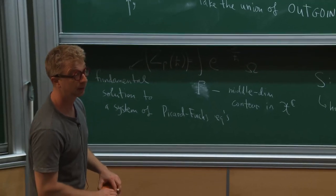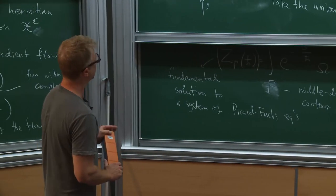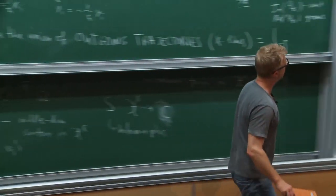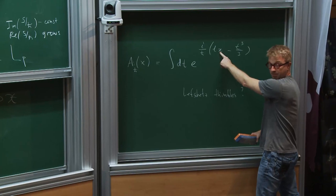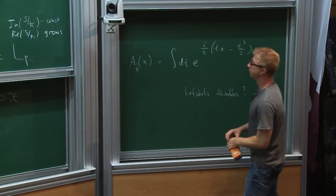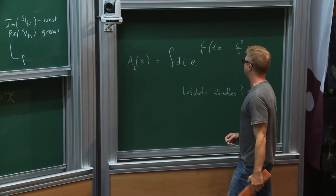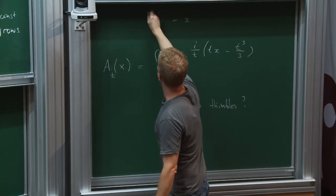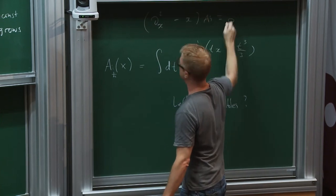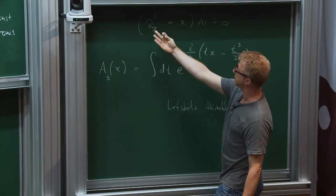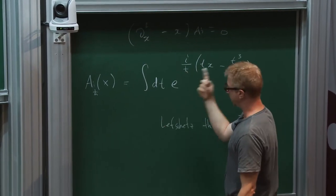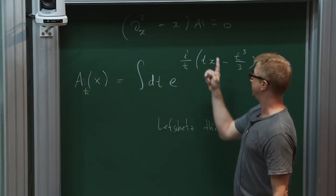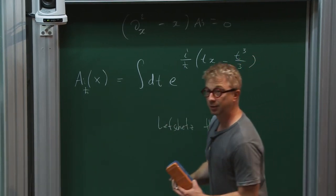Q: When you say Z is a fundamental solution to a system, in which variable? A: The parameters of S. For example, here the parameter of S is x, and so this function solves the famous equation, which is roughly d/dx squared minus x — that's the Picard-Fuchs equation. It's a second order equation with two solutions, because this integral has two possible contours and this function has two critical points — it all matches nicely.